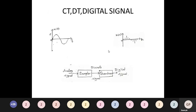There are no real-time digital signals available directly, but we can convert an analog signal into a digital signal by a two-step process. First, the analog signal passes through a sampler — discretization with respect to time — to obtain a discrete signal. Then the discrete signal passes through a quantizer — discretization with respect to amplitude — to obtain a digital signal.